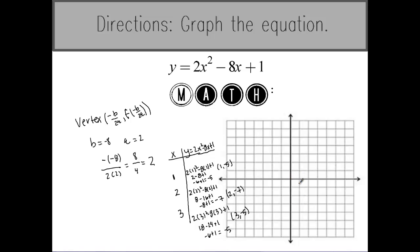I go to 1, negative 5, 1, 2, 3, 4, 5, plot my first point, go to 2, negative 7 which is right here and then I go 3, negative 5 which is here. Then I'm going to connect those points with a U shape.